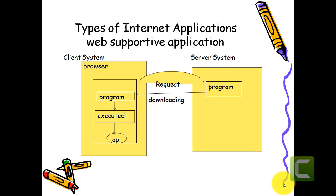Java is mainly used for internet applications, that's why we have more demand for the Java language. I already discussed standalone applications and web applications. Today we are going to see the types of internet applications. Java has more demand mainly because of internet applications. Internet applications are of two types: web supportive applications and web applications.